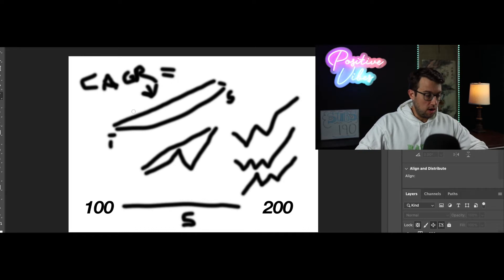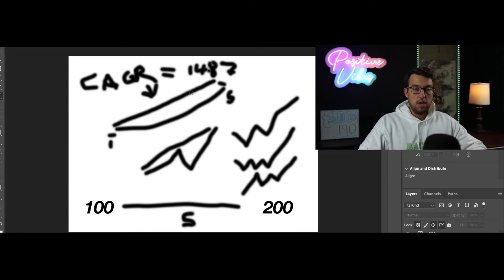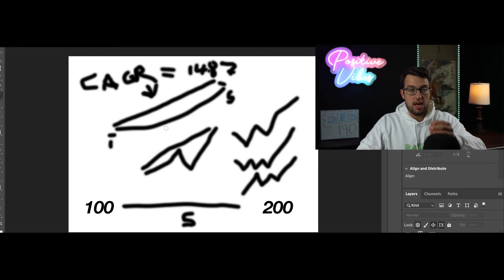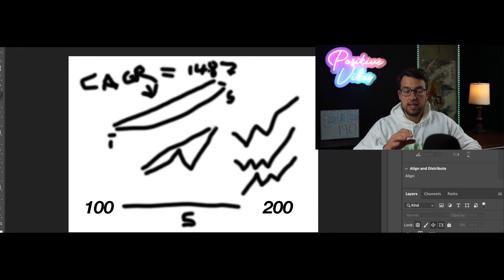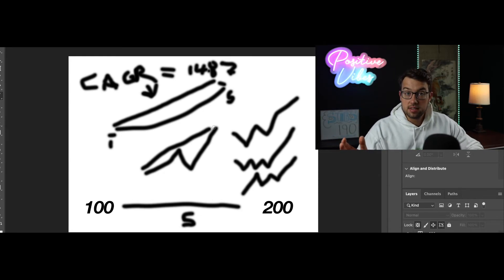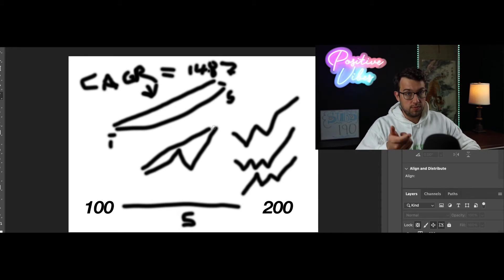For our example, that is 14.87. The reason is it compounds over time. So the compound annual growth rate is a way of calculating that steady rate of return over time. If this is confusing, let me dive into the Excel model for you some more.